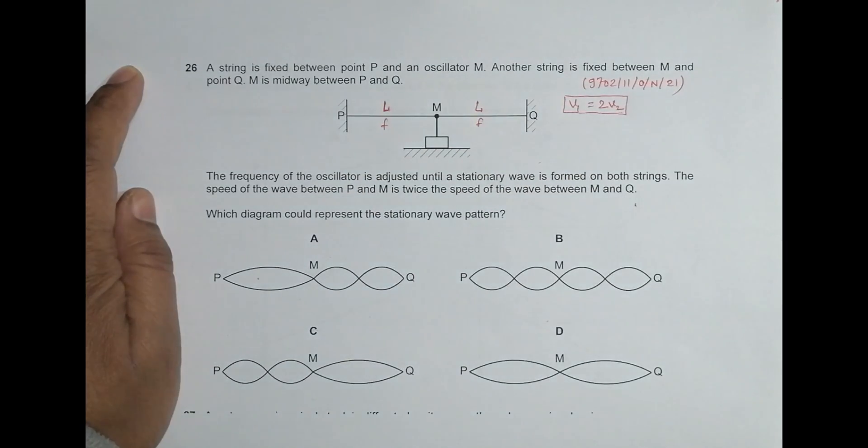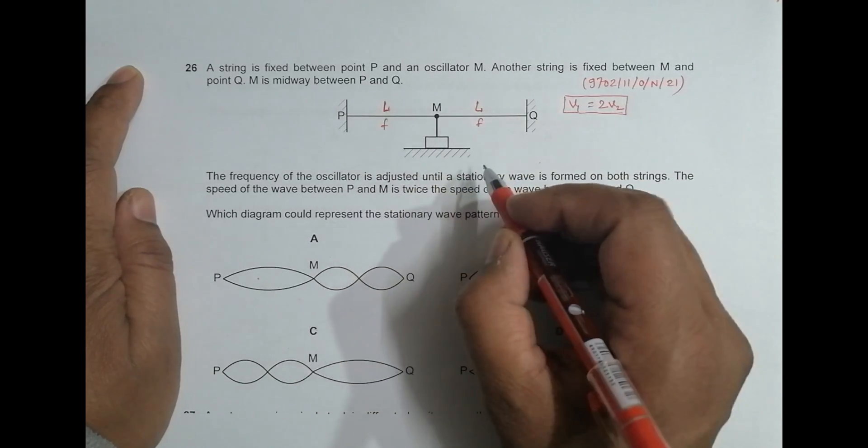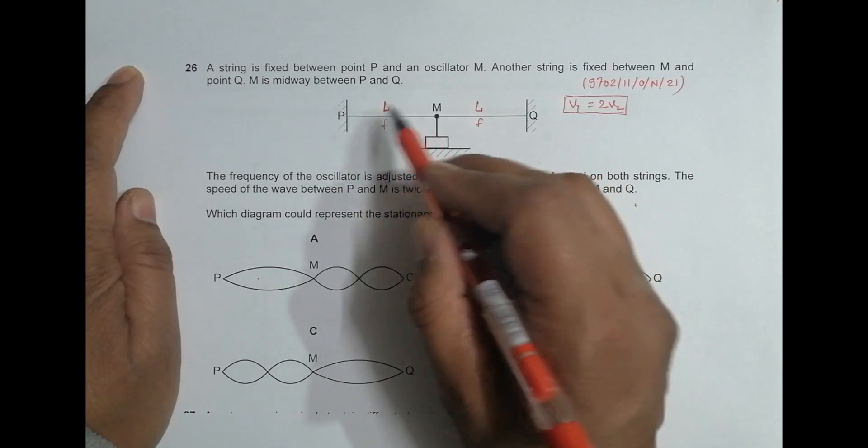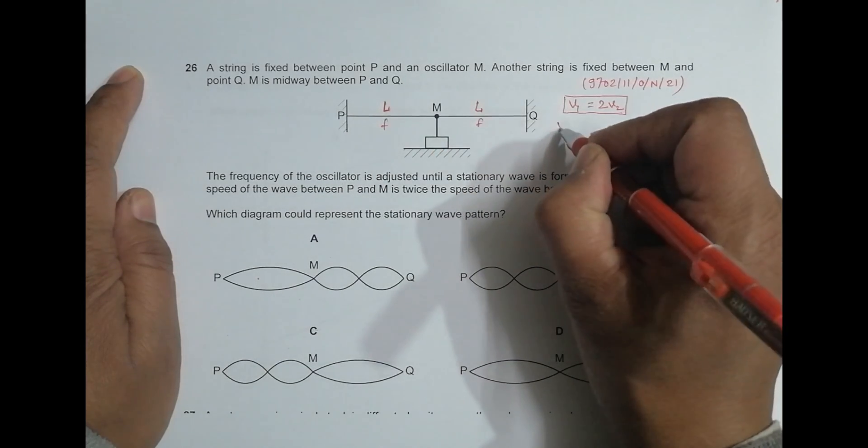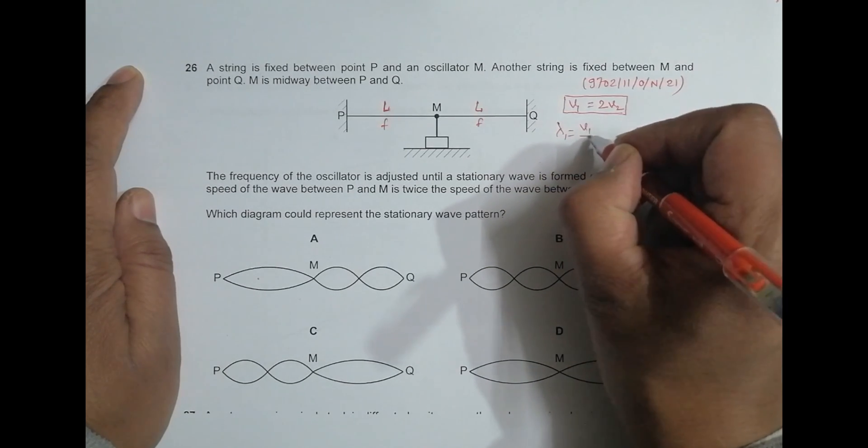What we have is the frequency on both sides is the same. Now let's say that lambda one is the wavelength of the wave formed here. So lambda one should be equal to V1 by F.